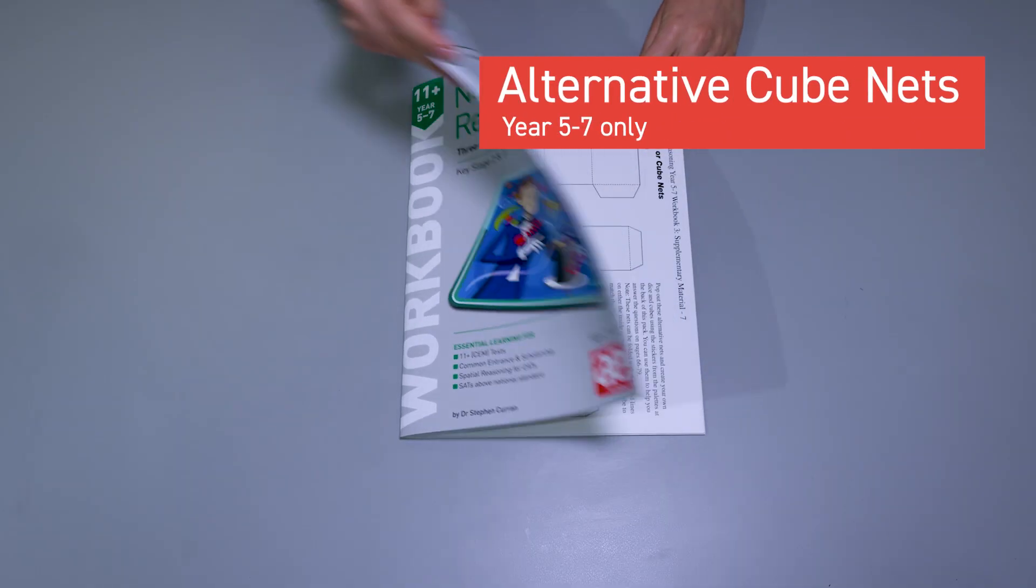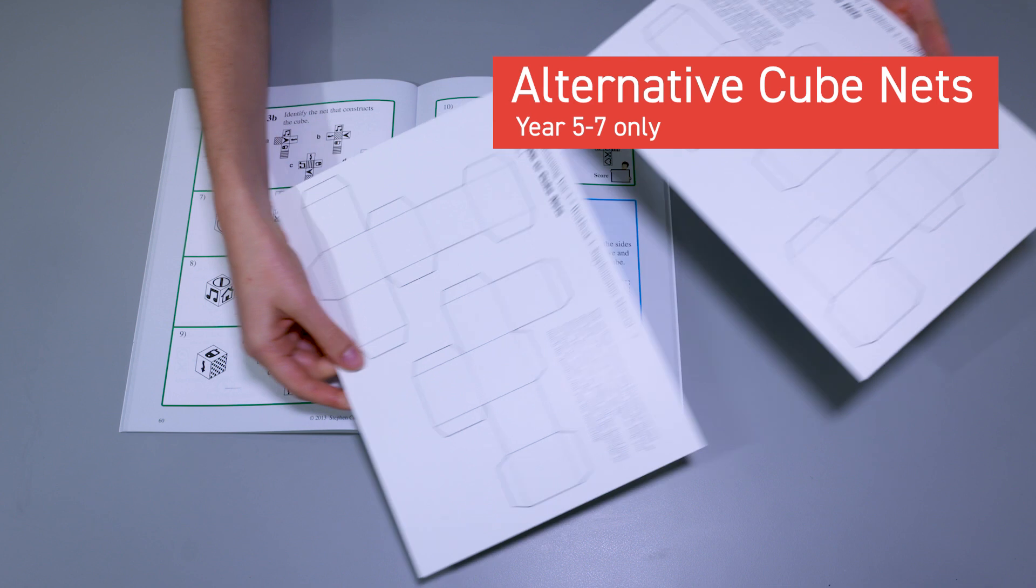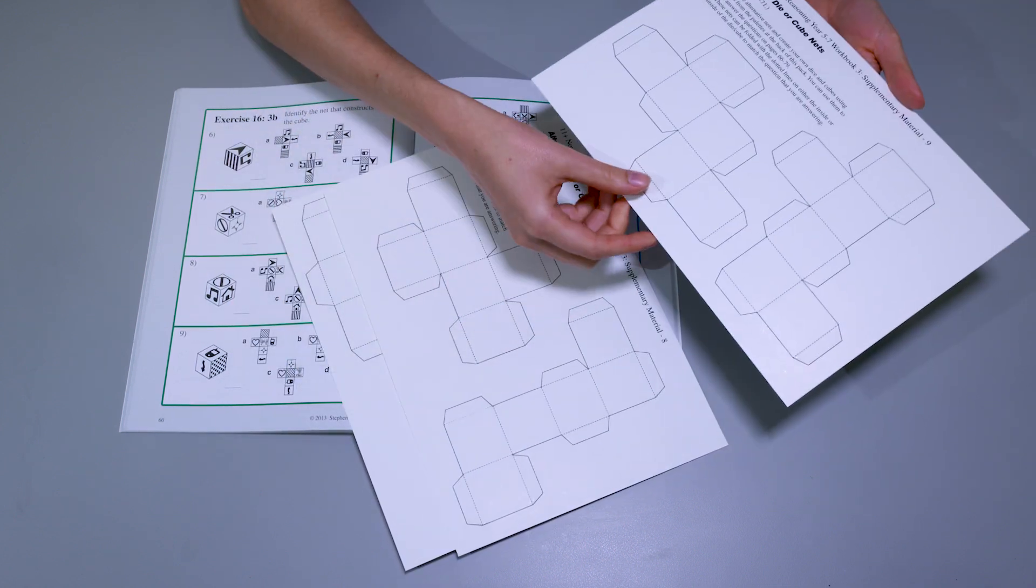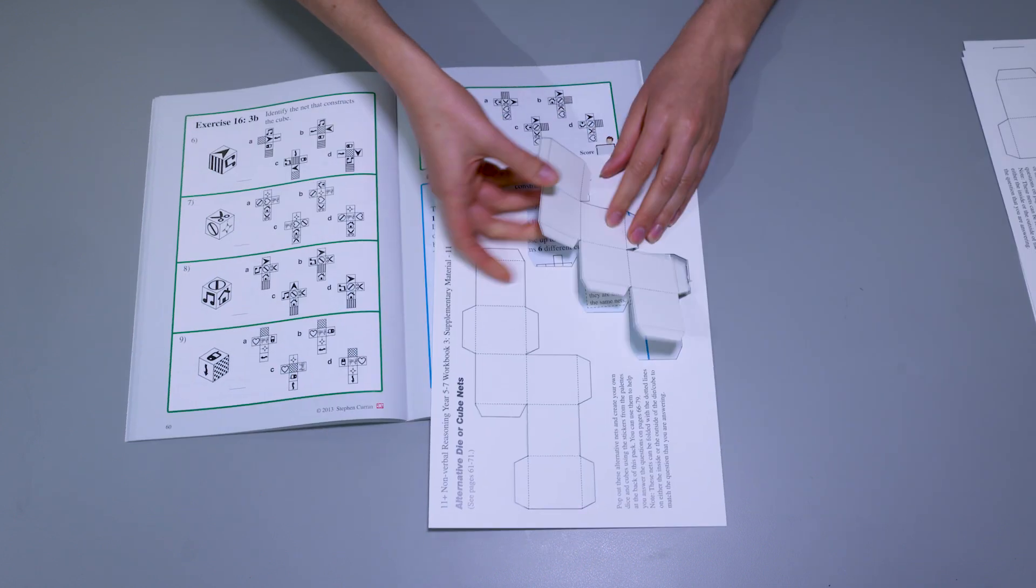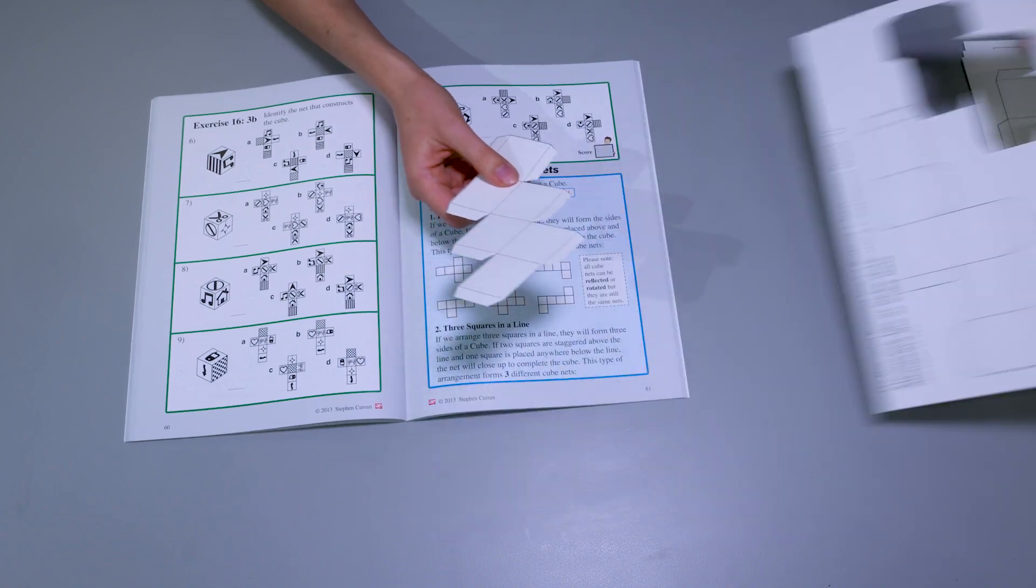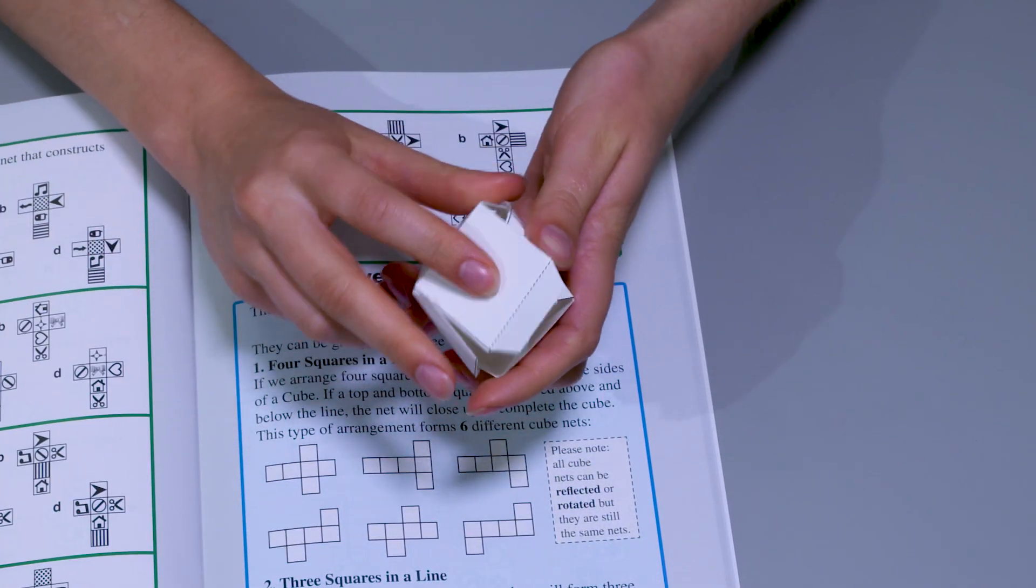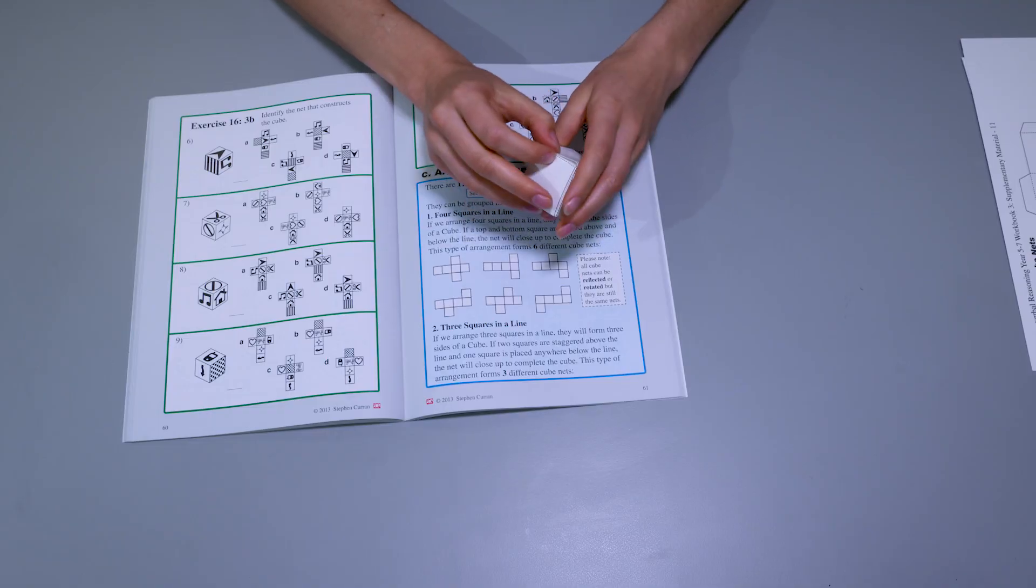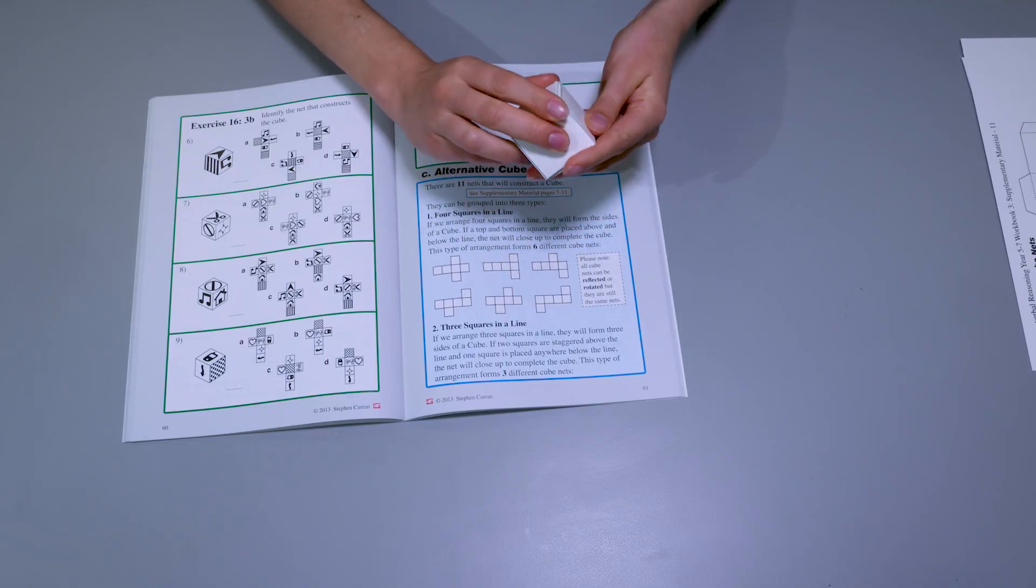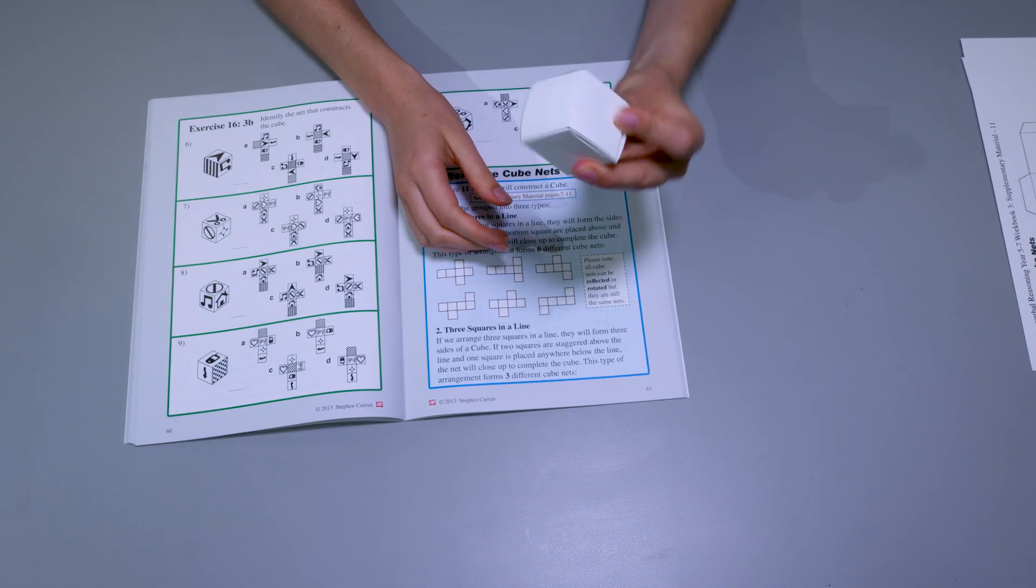Alternative cube nets. The Year 5 to 7 book also contains alternative dice and cube nets to use with more advanced Nonverbal Reasoning questions of this type. If your child is struggling with 3D Nonverbal Reasoning questions, this pack will be a valuable resource.